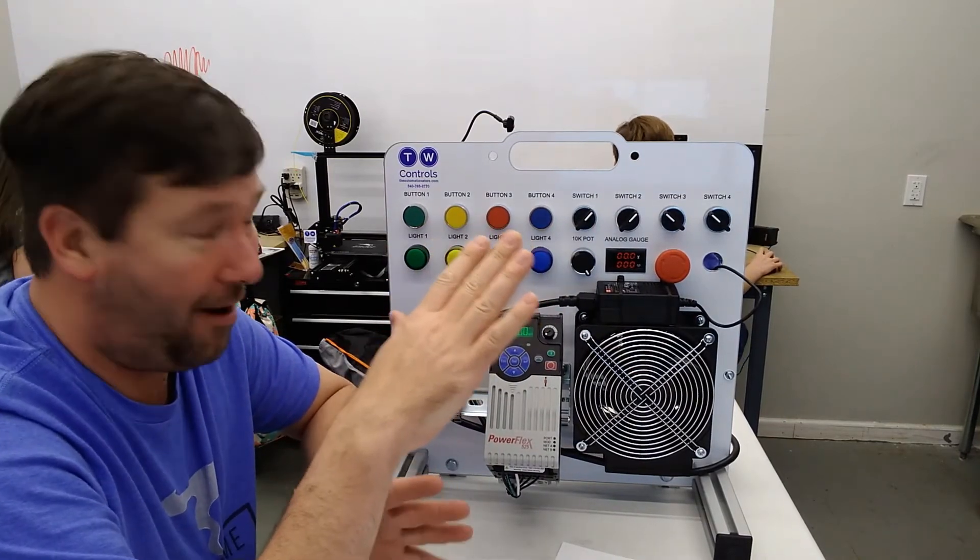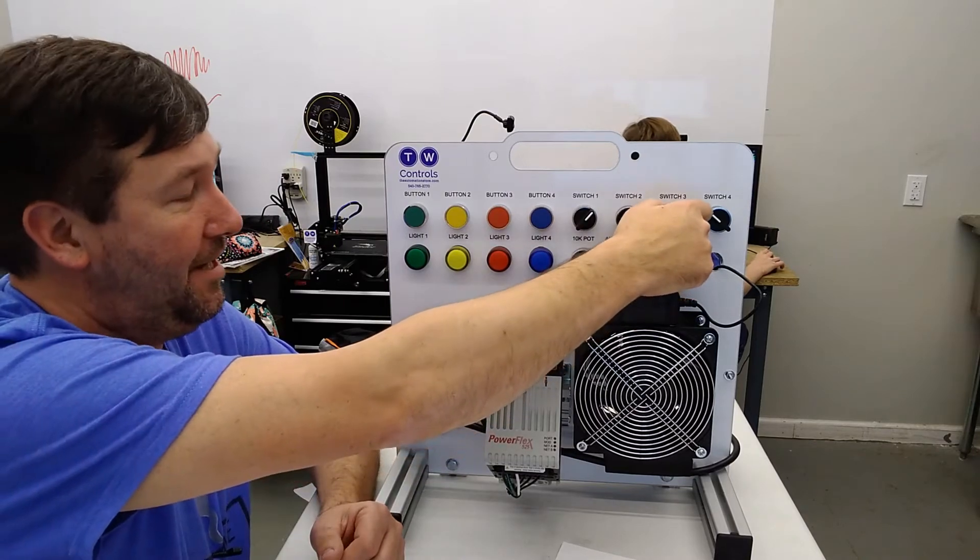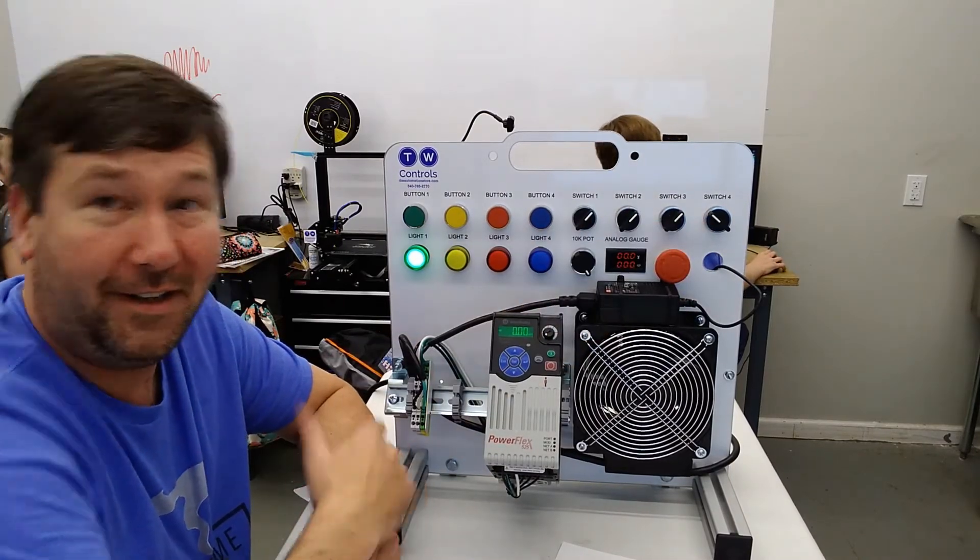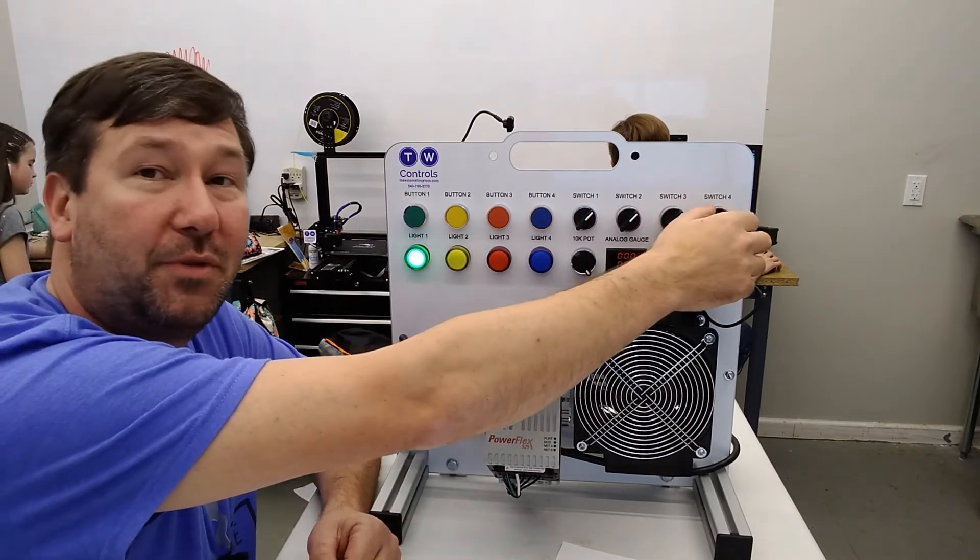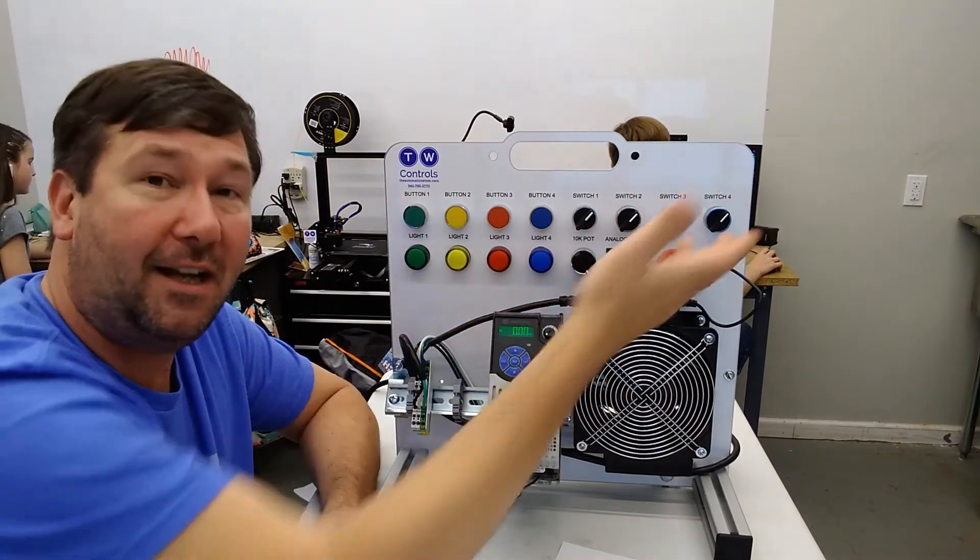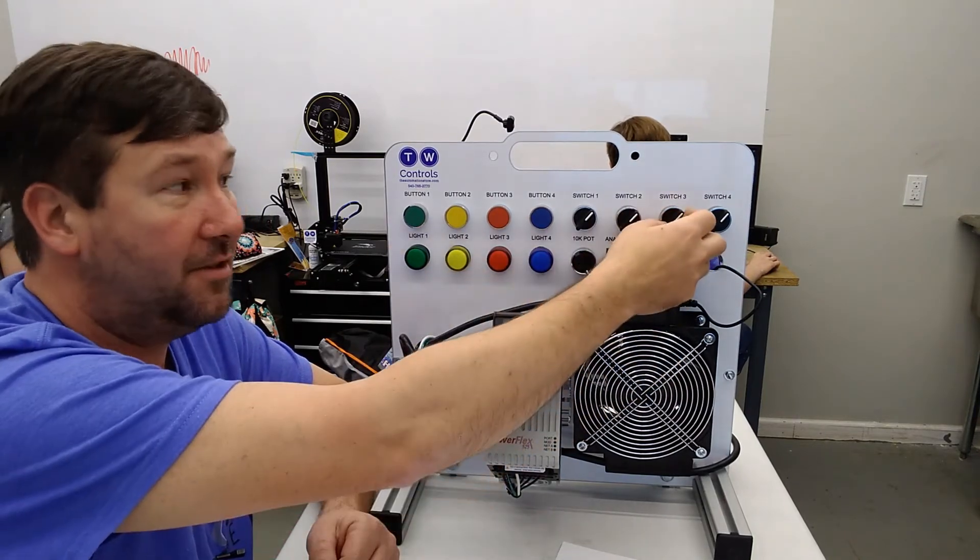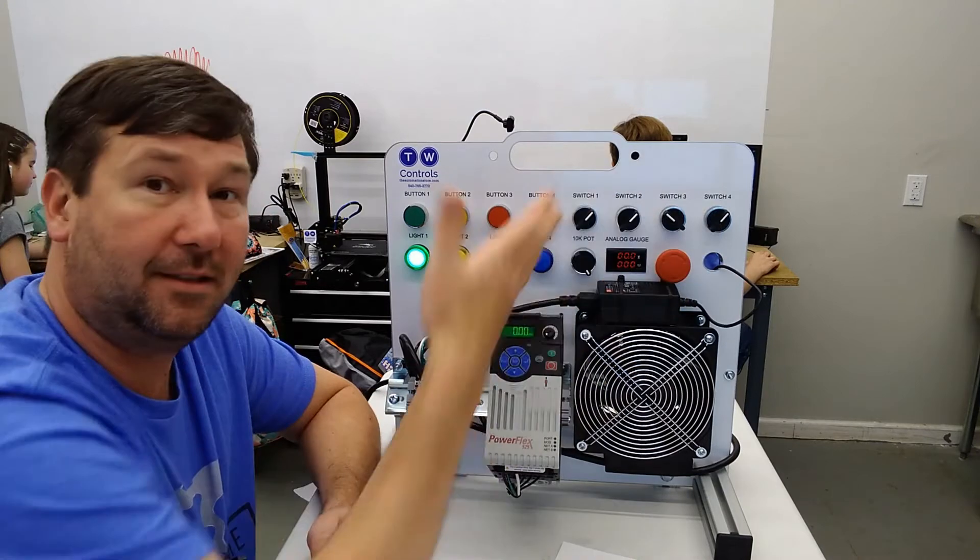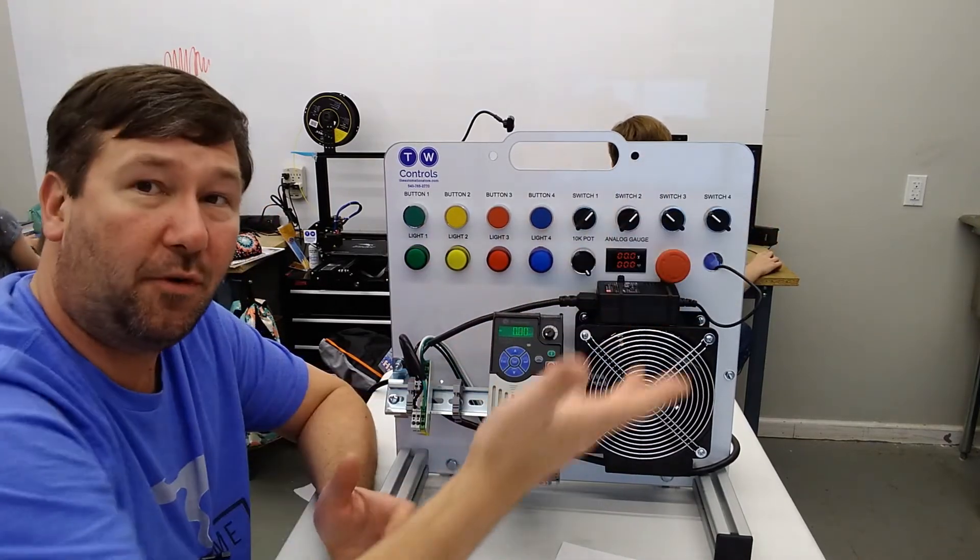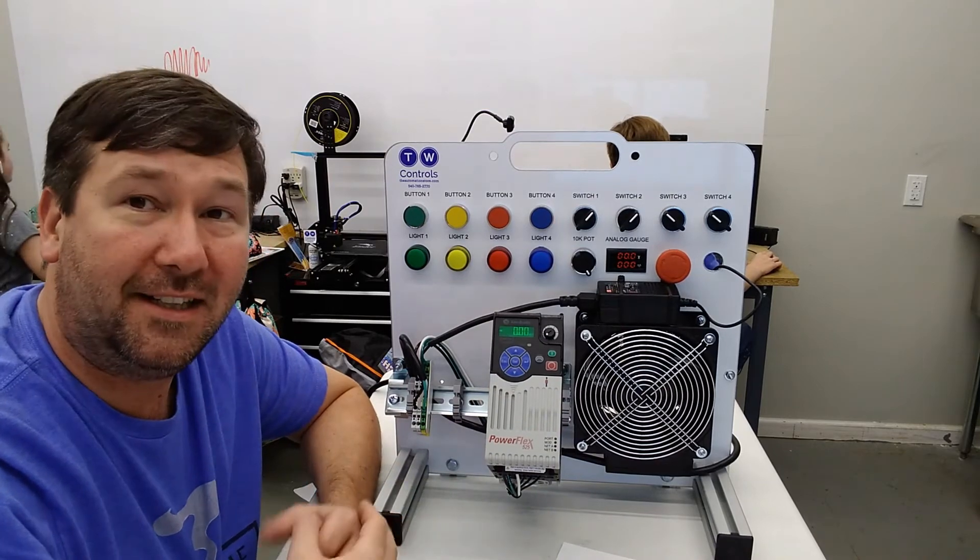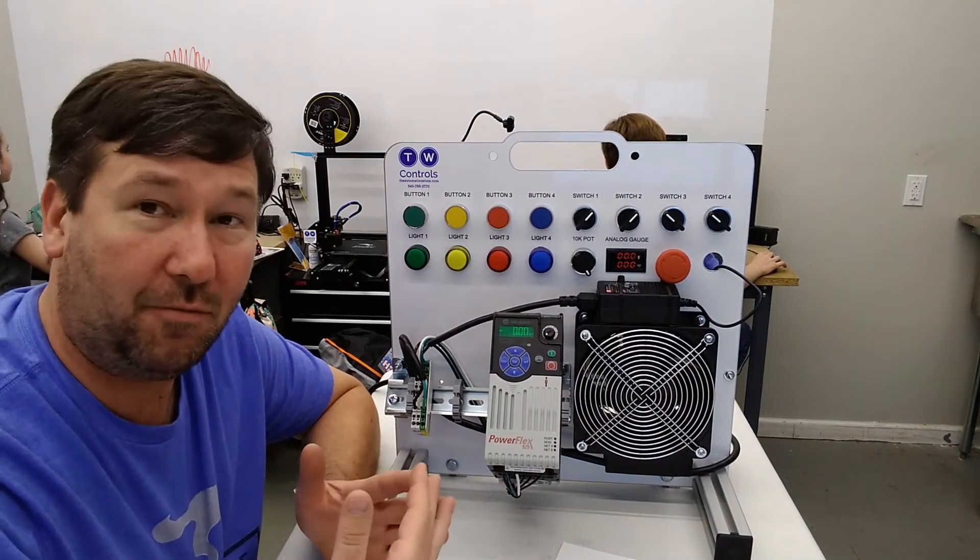Now the key to a properly wired three-way switch is we switch switch three on to turn our light on, which is like at the top of our step. We walk down the steps and we switch switch four, and the light goes back off. Then somebody else comes through and uses switch three to go back to the left. Light comes back on, and they go down. Switch four turns it back off. And that is how a three-way switch should work.